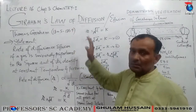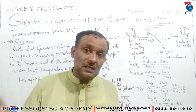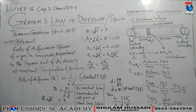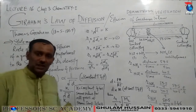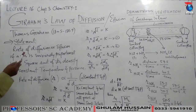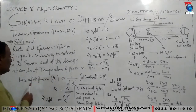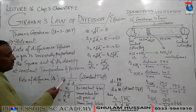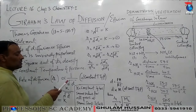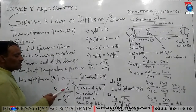Thomas Graham was born in 1805 and died in 1869. He presented his law of diffusion based on experimental observations — not on any theory, logic, or background knowledge. His statement: the rate of diffusion or effusion of a gas — that is, the speed of motion of gas molecules — is inversely proportional to the square root of the gas's density.